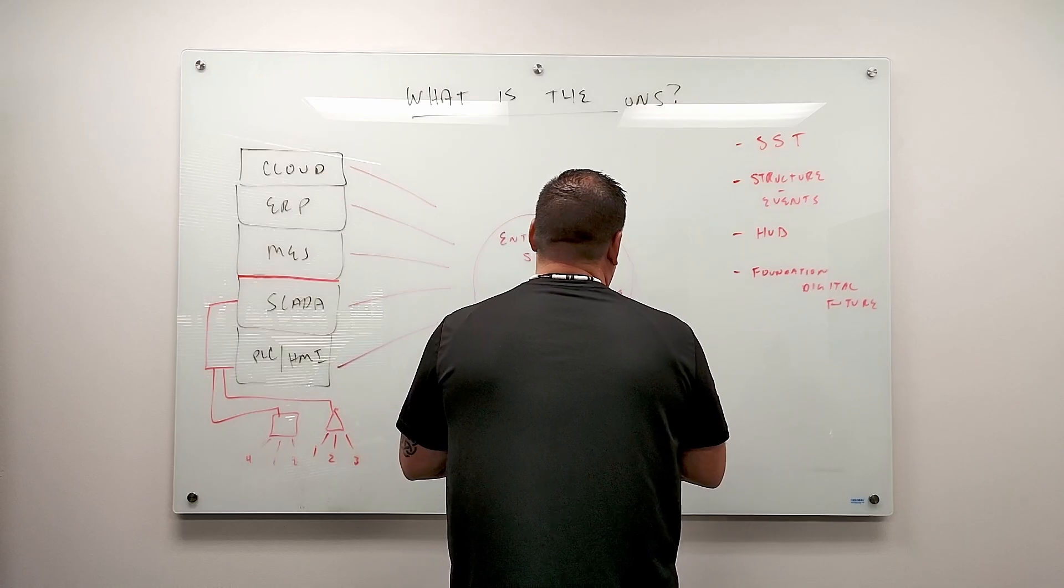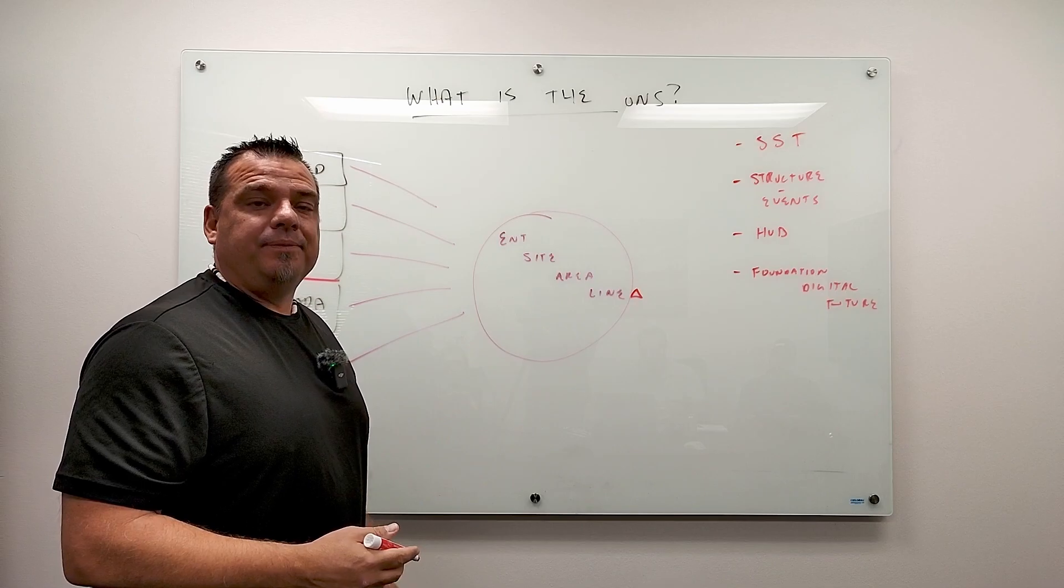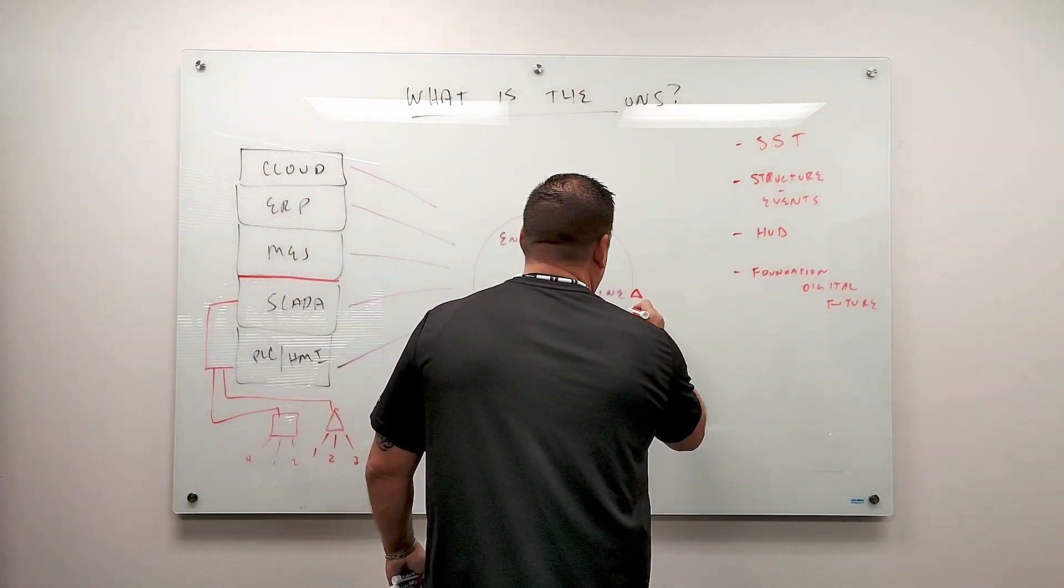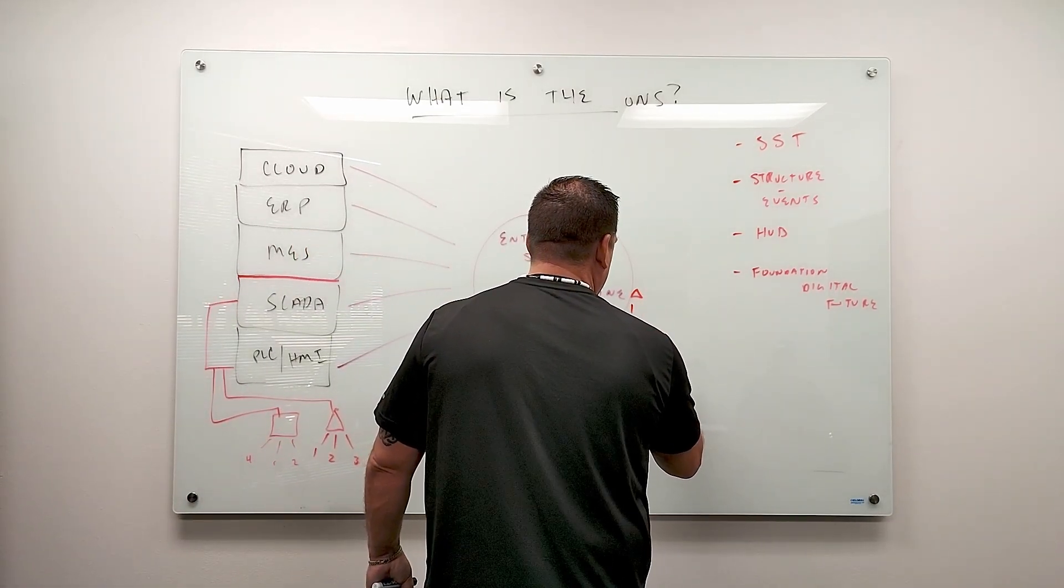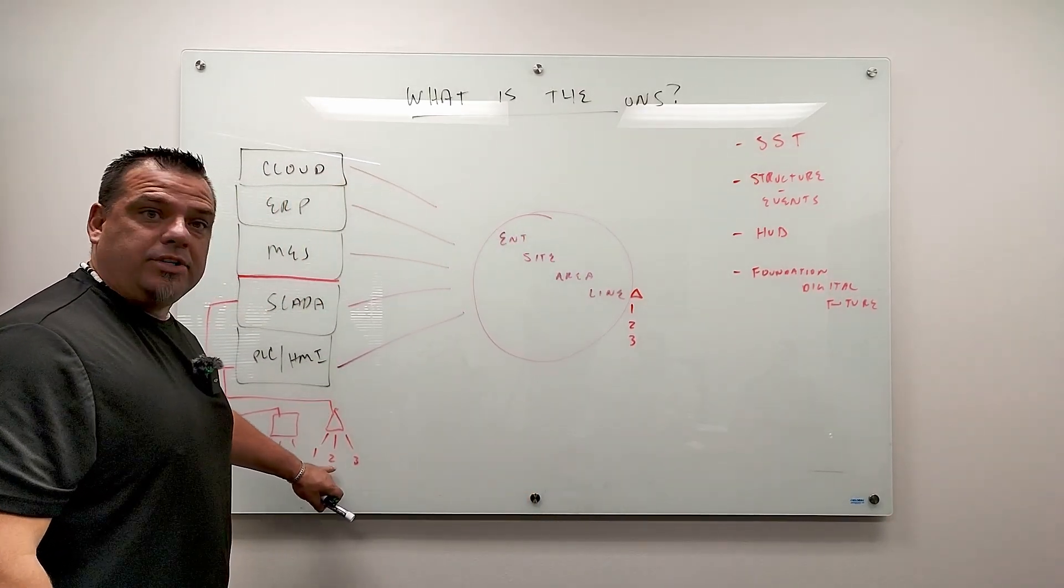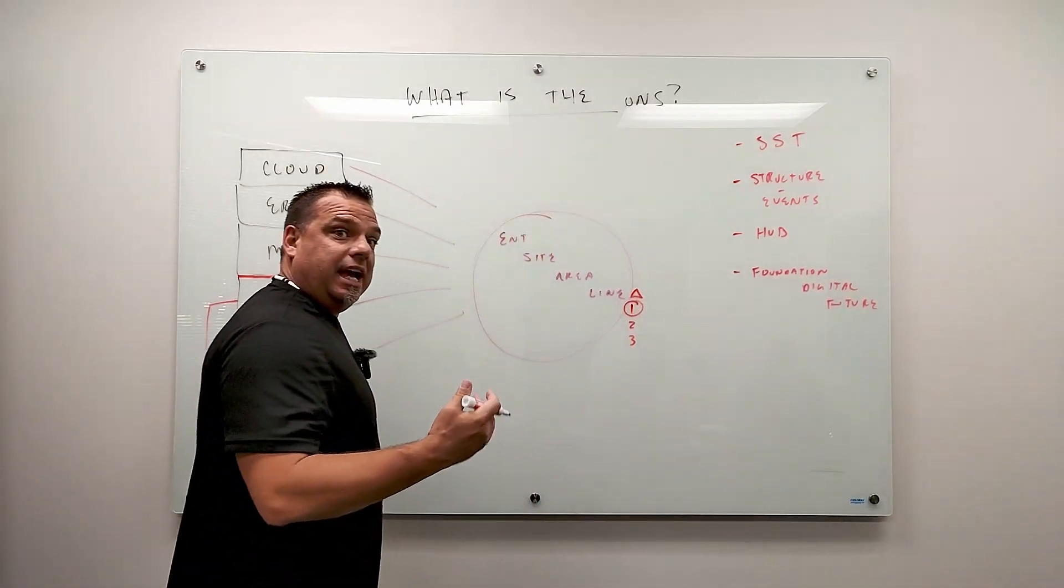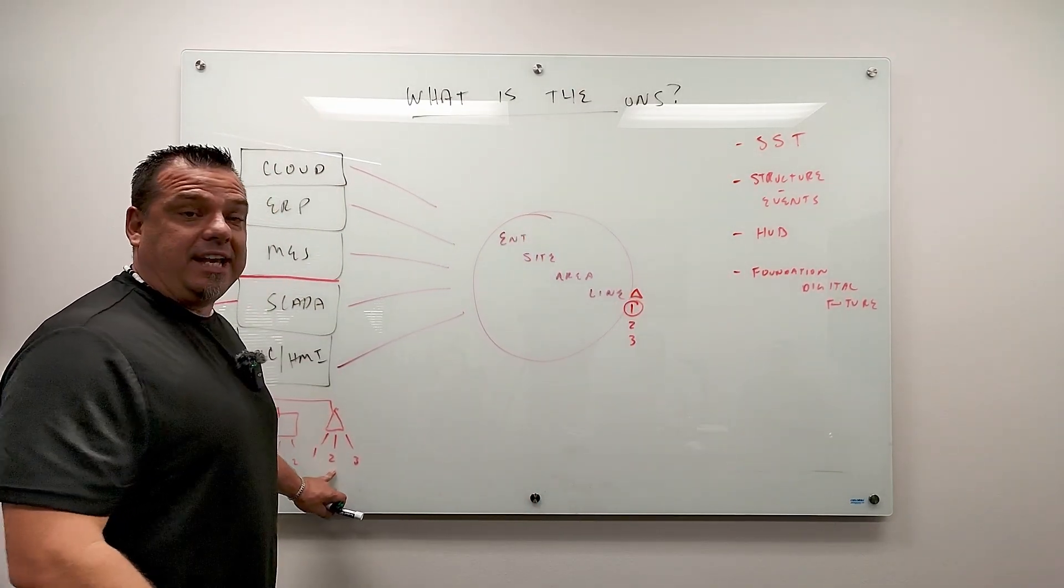So let's say that this line is that triangle right there. So I would have this line, the name of the line would be that triangle. And underneath that triangle, I would have one, two, and three data point one, data point two, data point three data point one.